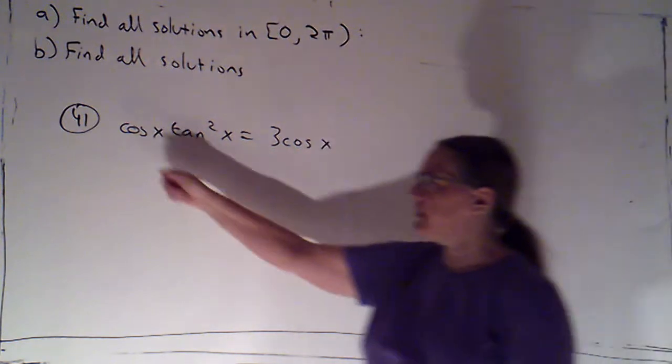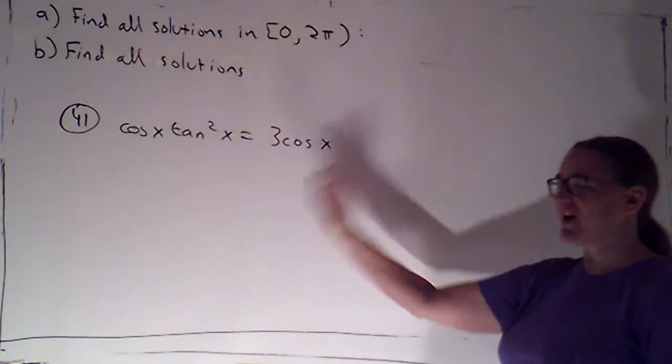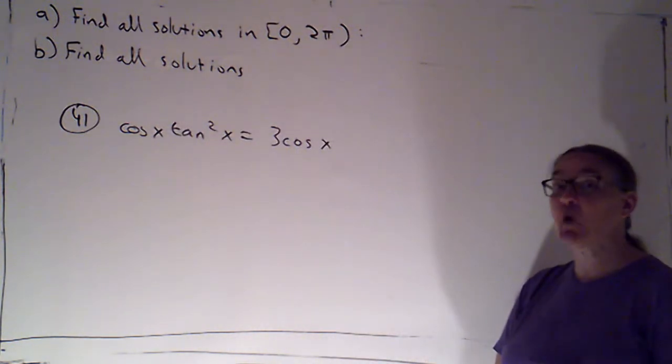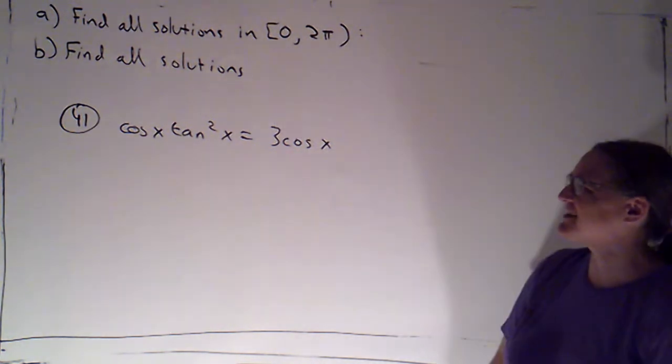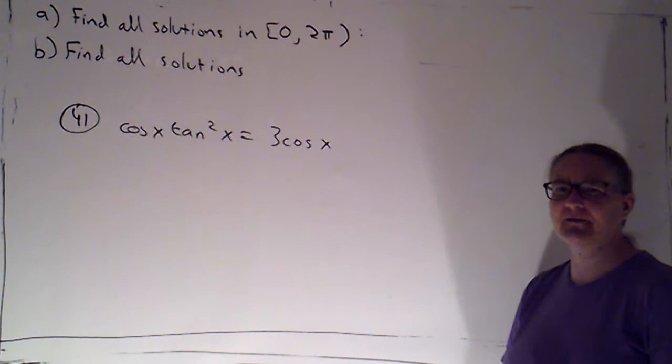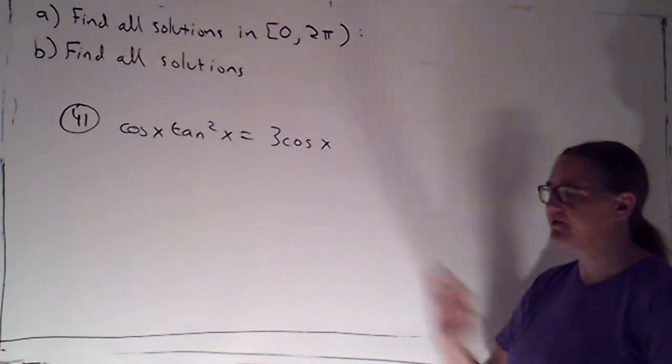First of all, avoid the common pitfall of trying to divide by something that you don't know isn't zero. I can actually see if cosine of x is zero, that's going to give me some solutions. So don't divide that out and lose those solutions.